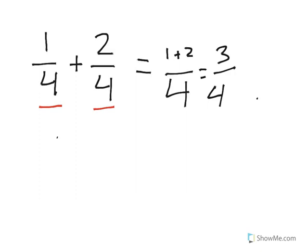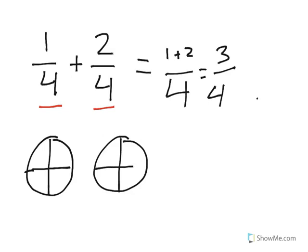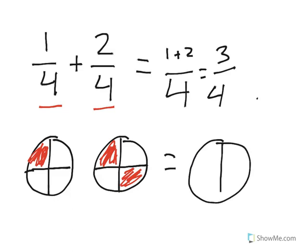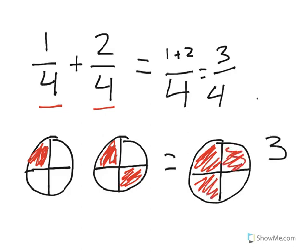I'm going to show you what that looks like as a picture using circle area models. These are divided into fourths. I'll shade in one piece for one fourth, and then over here shade in two pieces for two fourths. That equals — in another area model divided into fourths — one, two, three shaded pieces. So our answer is three fourths: one fourth plus two fourths equals three fourths.